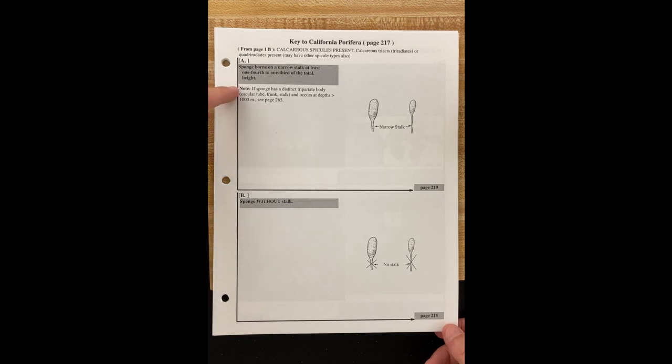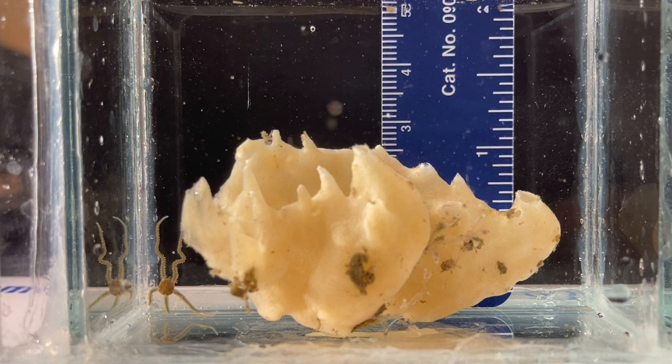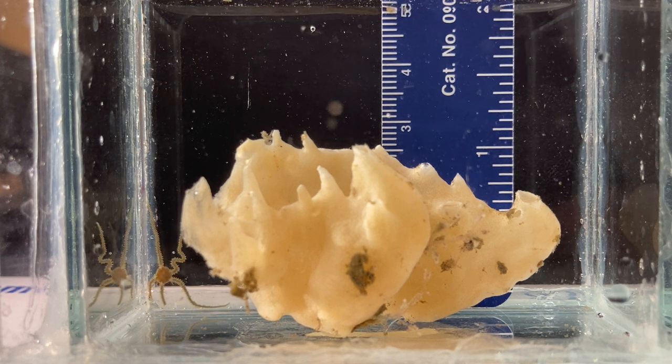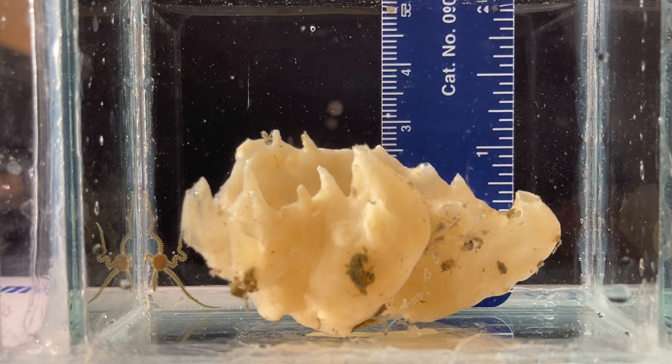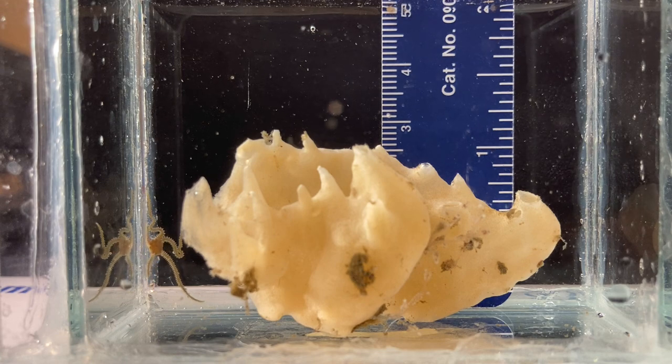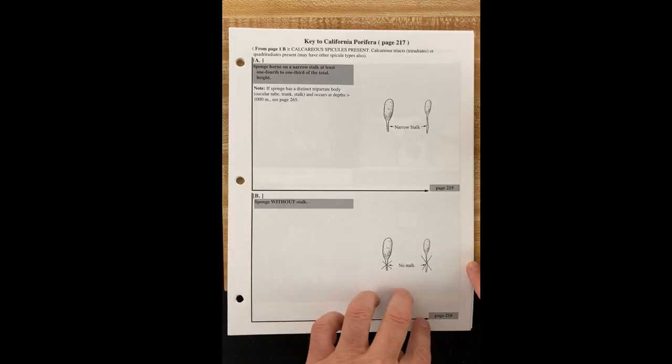Okay, so here's the couplet. A, the sponge is either born on a narrow stalk at least one-fourth to one-third of the total height like that or B, no, no stalk. That brittle star is distracting but there is definitely no stalk. So that means we go to page 218.